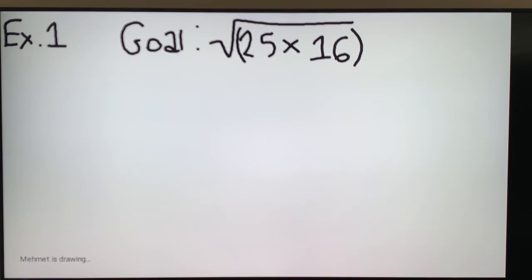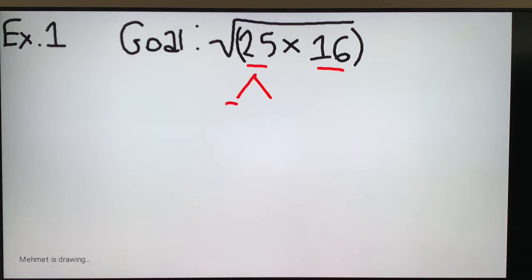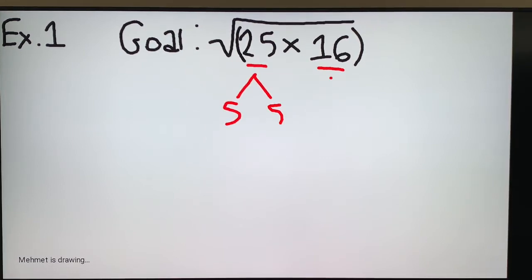So you need to recognize that since it's a square root, you're going to want, these are perfect squares, 25 and 16. This breaks off into 5 times 5, and this breaks off into 4 times 4.